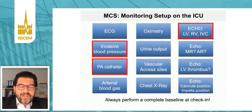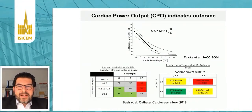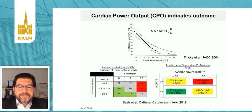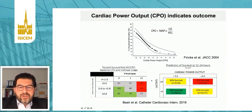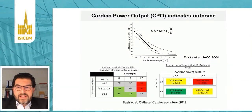Cardiac power output is a traditional marker calculated as mean arterial pressure times cardiac output divided by 451. Already 16 years back in the SHOCK trial, the authors demonstrated that a reduction in cardiac power output is directly associated with an increase in in-hospital mortality. You can further sharpen this by adding the number of inotropes used and systemic lactate levels. In the NCSI data from Detroit — the National Cardiogenic Shock Initiative — the authors demonstrated that in patients with low cardiac power output, high use of inotropes, and high lactate levels, survival is strongly decreased in AMI-related cardiogenic shock.